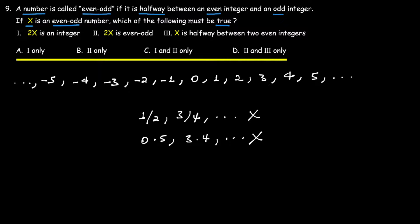Even integers include: zero, two, four, six, eight, ten, and so on, as well as their negatives: negative two, negative four, negative six, negative eight. Odd integers include: one, three, five, seven, nine, and their negatives: negative one, negative three, negative five, negative seven, negative nine.